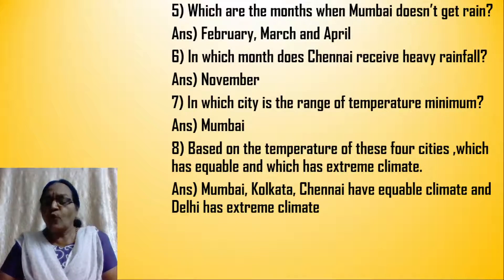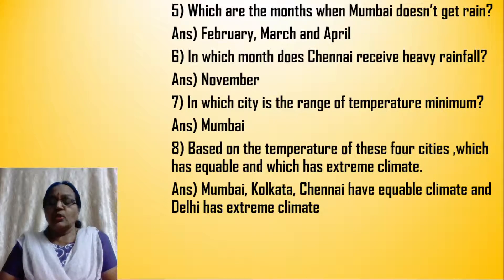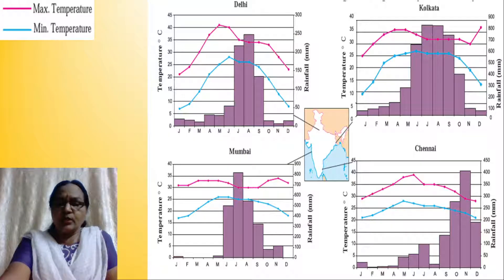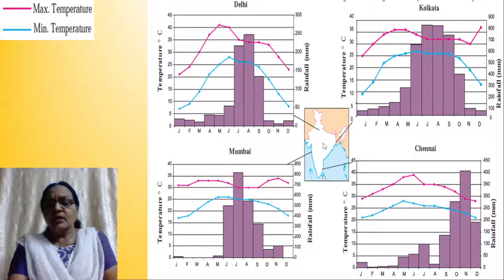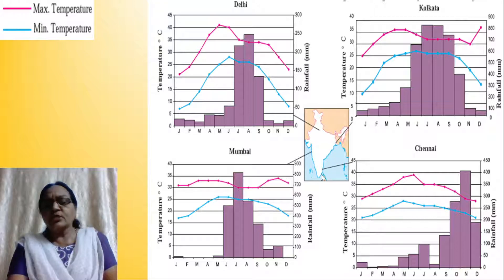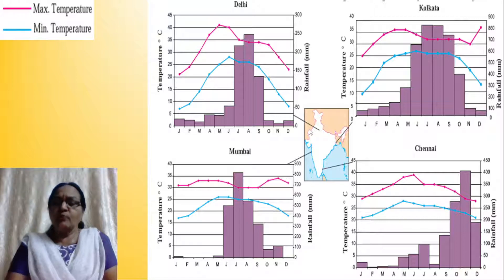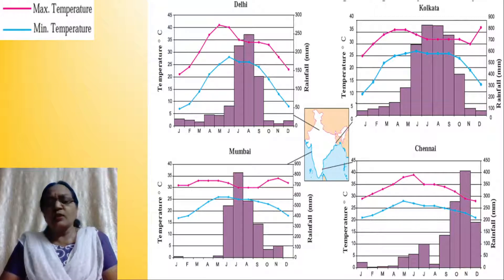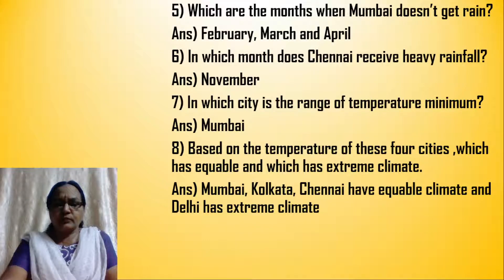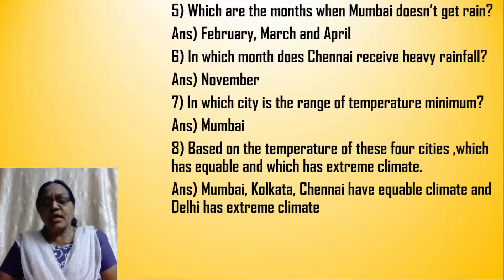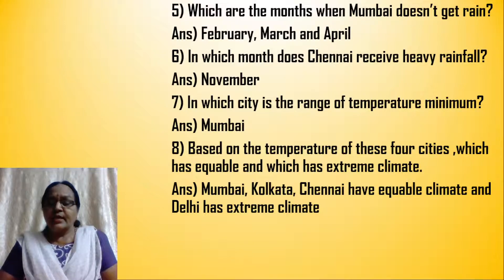Based on the temperature of these four cities, which has equable and which has extreme climate? Those cities which are along the coast — Mumbai, Chennai, and Kolkata — have equable climate. Delhi, which is centrally located and far from the sea, has extremes of climate. So Mumbai, Kolkata, and Chennai have equable climate, and Delhi has extreme climate.